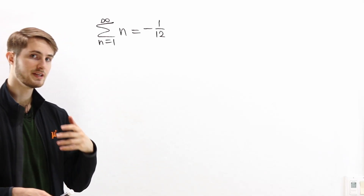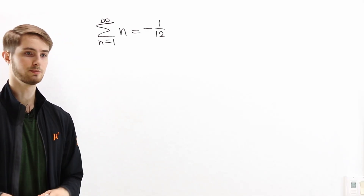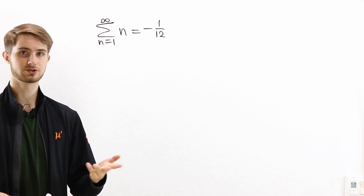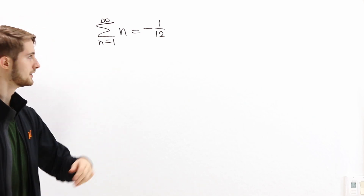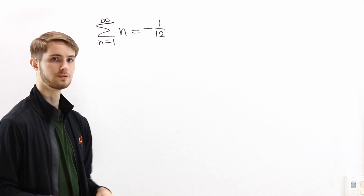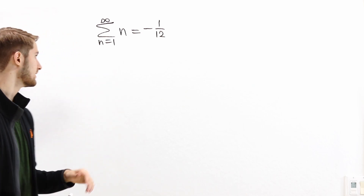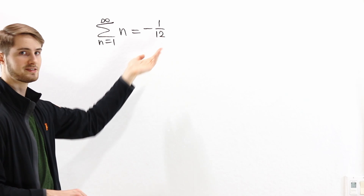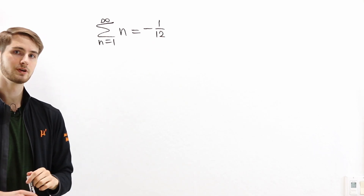Sometimes people say that the sum of all natural numbers, 1 plus 2 plus 3 plus 4 and so on, equals negative one twelfth. And some other people say that that idea is ridiculous, and the sum obviously doesn't equal negative one twelfth.